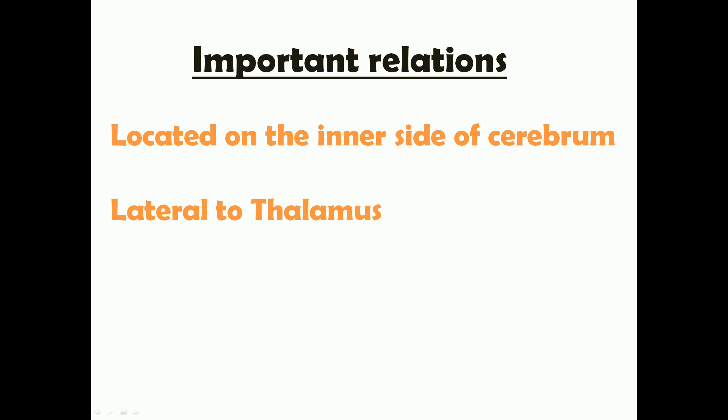First, where is the basal ganglia located? The basal ganglia is located on the inner side of the cerebrum. Just imagine the cerebral hemispheres in your brain — just inside the cerebrum is the basal ganglia. It is situated lateral to the thalamus, so the order from medial to lateral is: thalamus, then basal ganglia, then cerebrum.